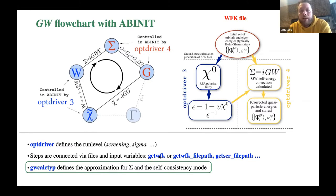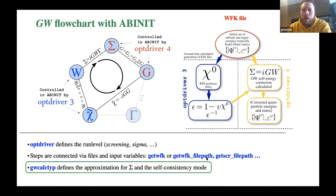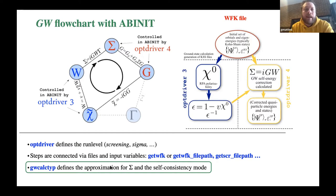All these steps are connected through files specified by certain variables. There are two versions: one accepts the index of the dataset if you want a single input file that performs all calculations, or alternatively you can specify the name of the external file using the file path version. There's also an important variable, GW calc type, that defines the kind of self-consistency mode and approximation to use.